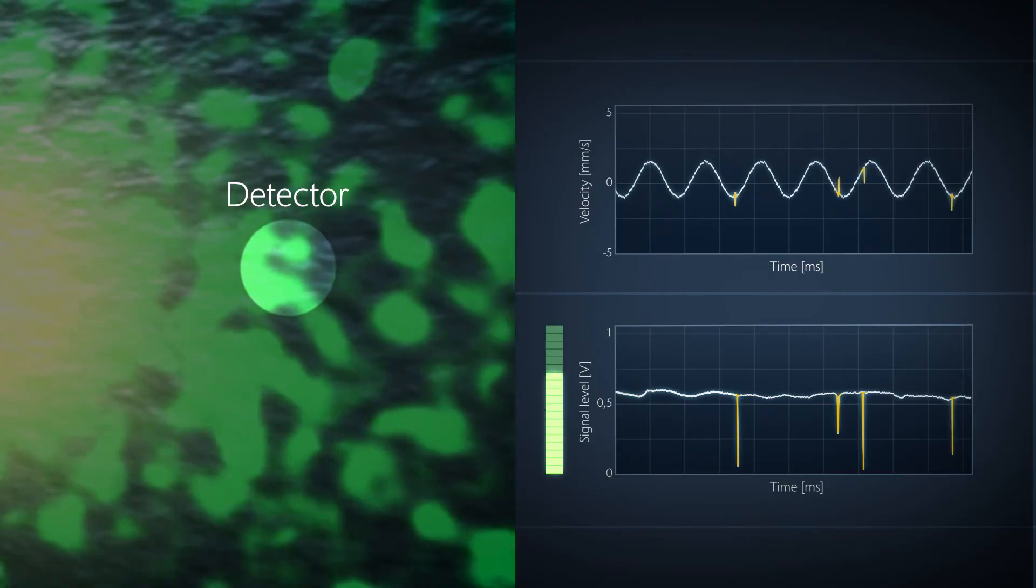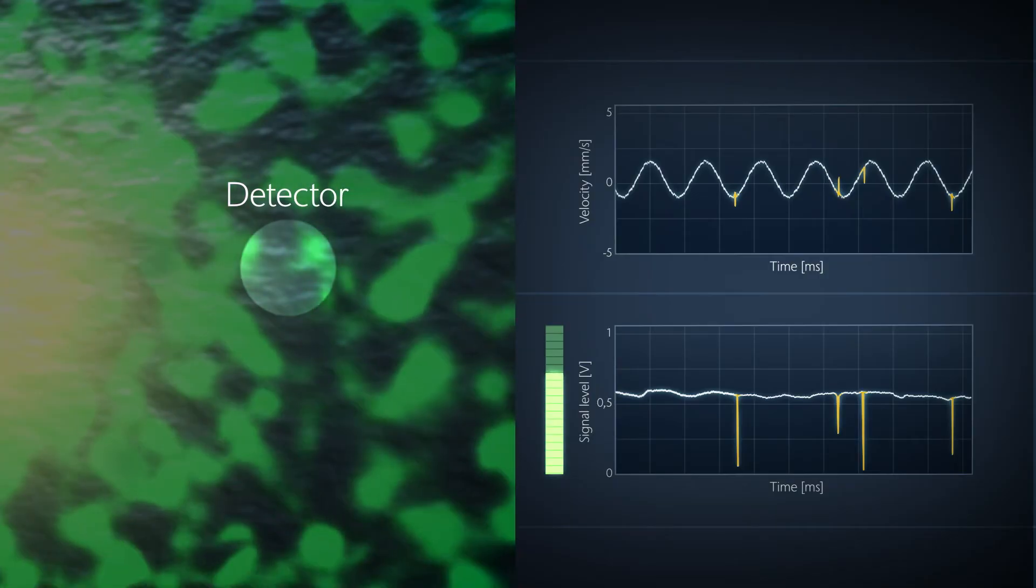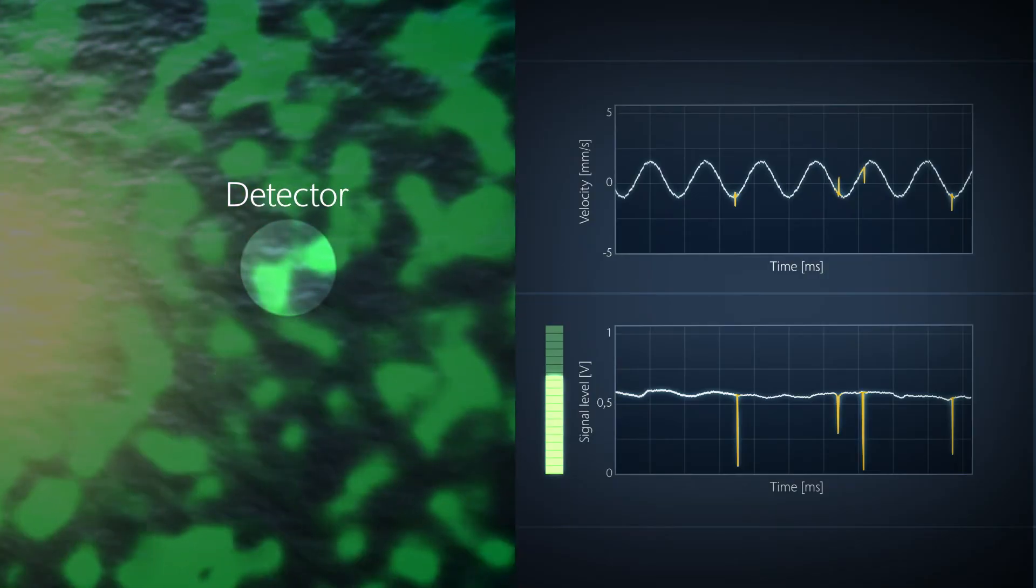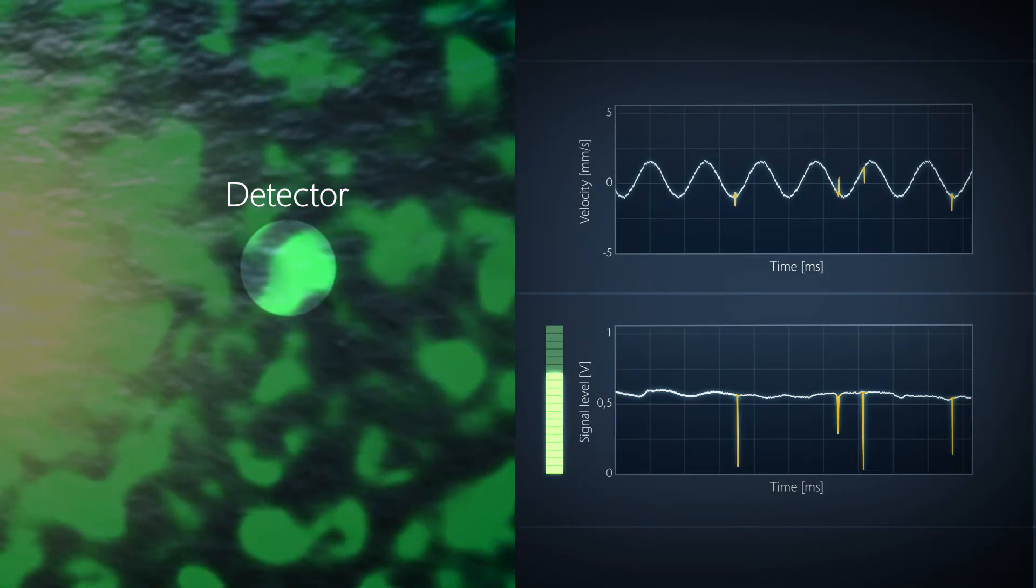It can even drop down to zero for a very short time. Occasionally no light returns at the photodetector. This effect can cause broadband noise and unwanted dropouts with optical measurements.